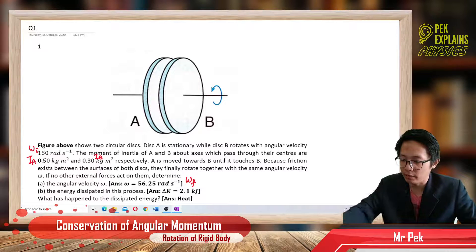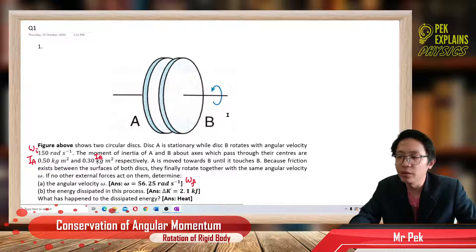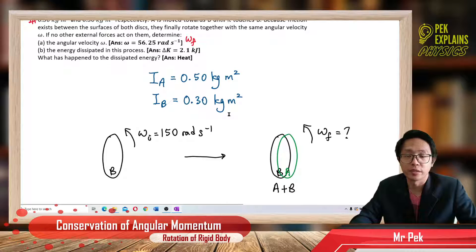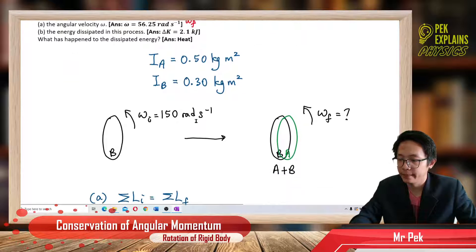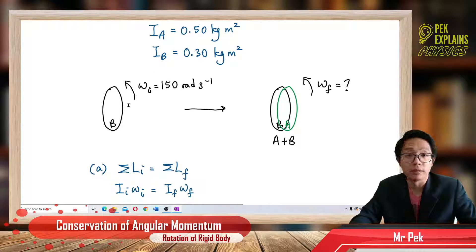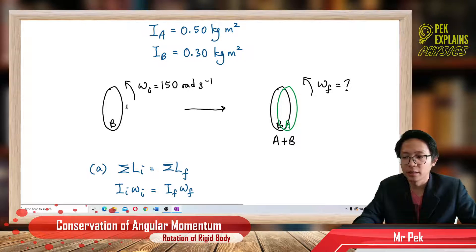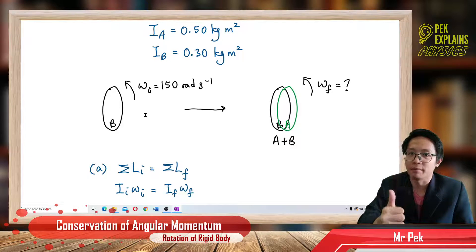So now, what to do? We use conservation of angular momentum. It's always a good practice to picture out the situation in physics, so that we have a clear picture and can use the right concept and the right principle to solve our question.